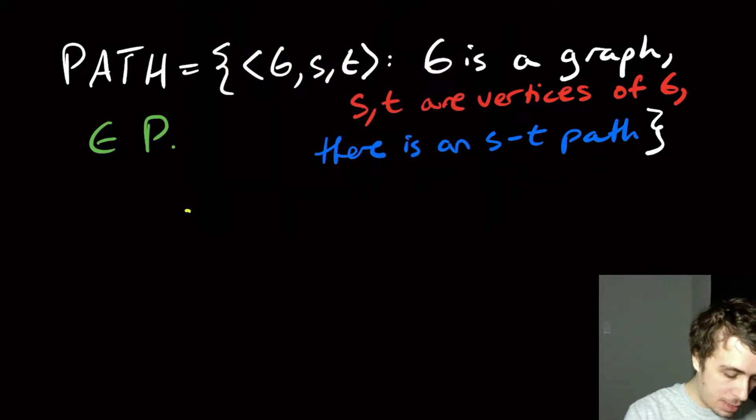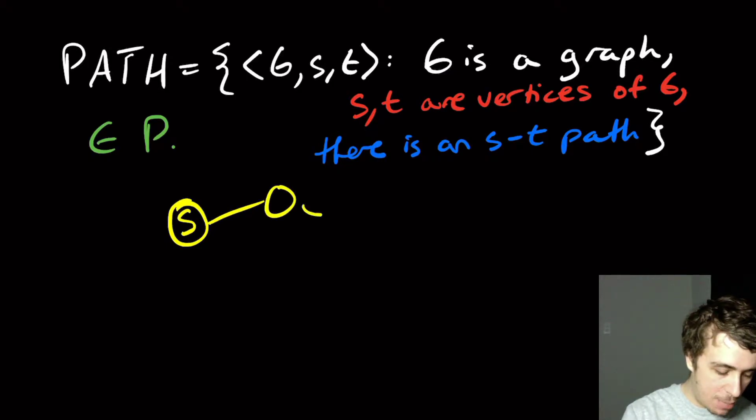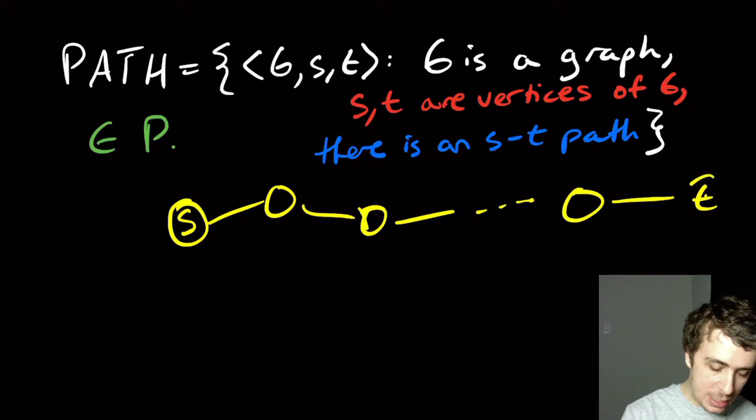By path, we mean that S is a vertex of this graph, and we have a bunch of nodes in between, and eventually we get to T.